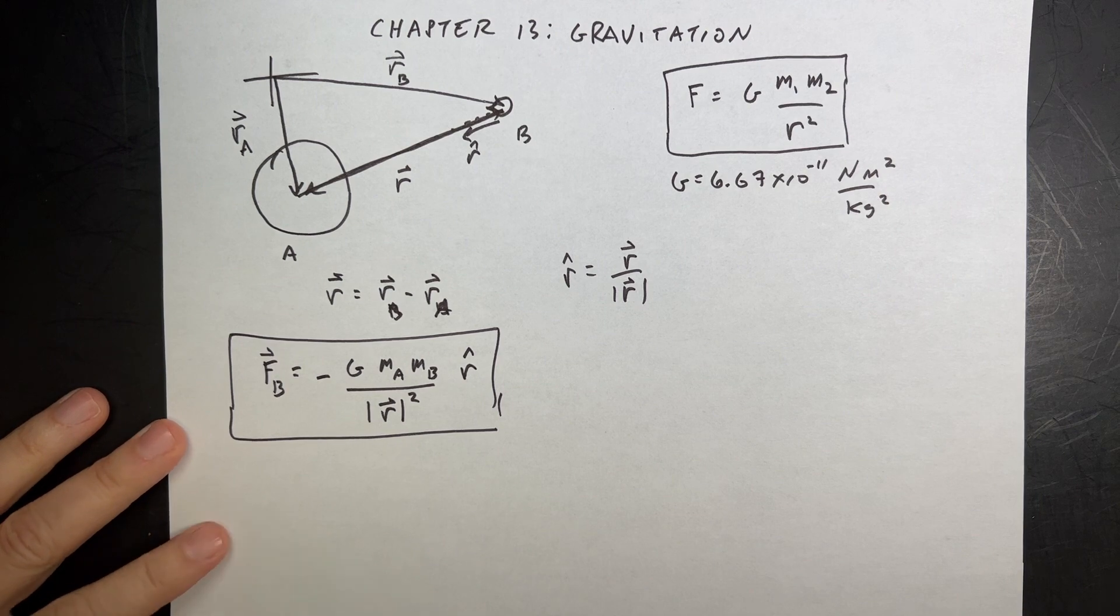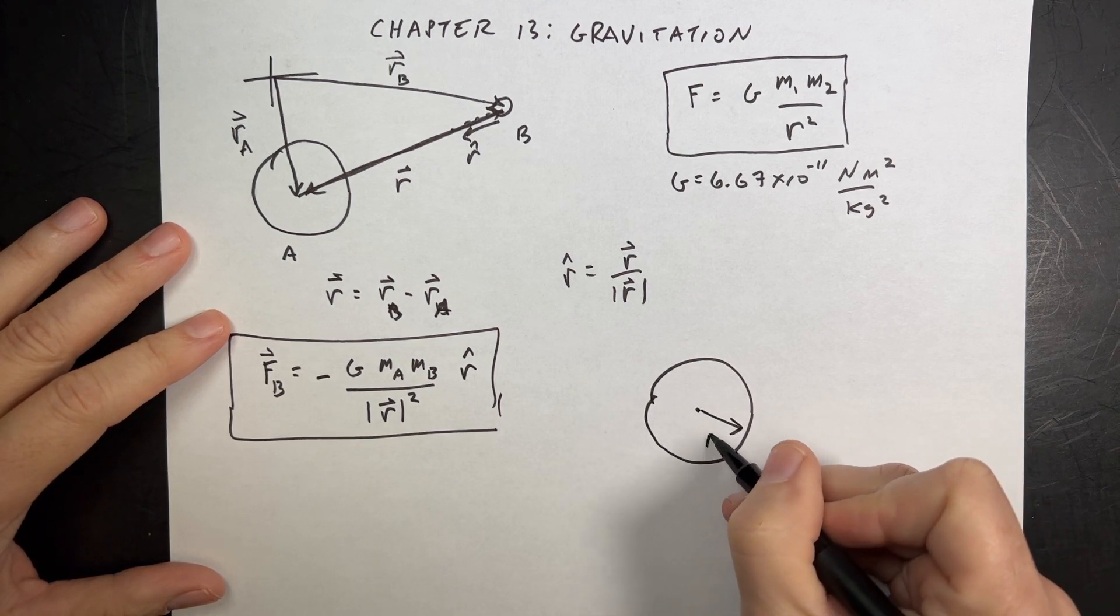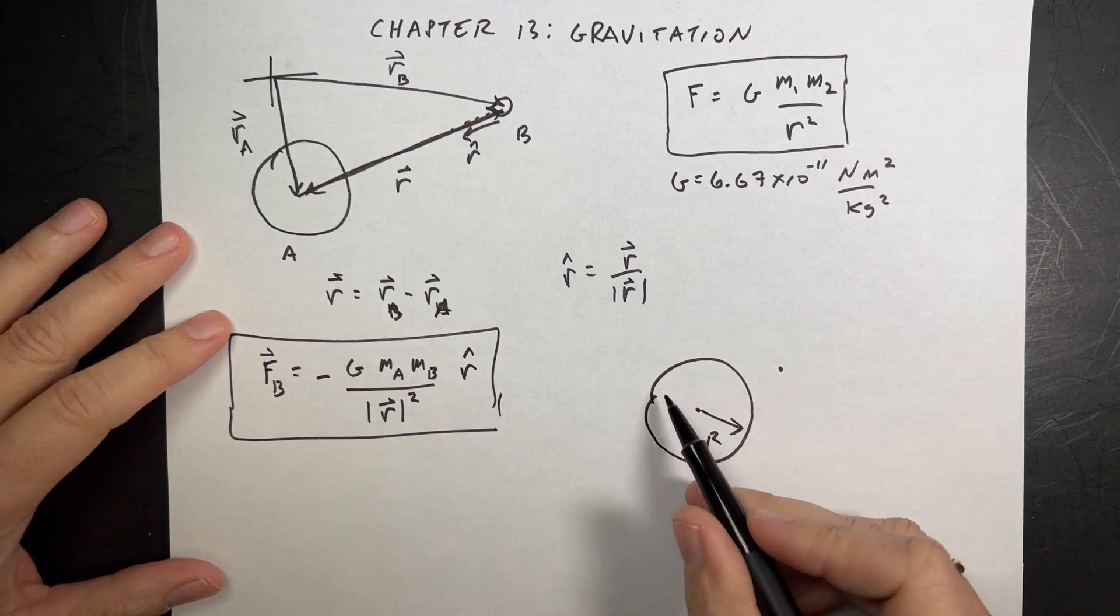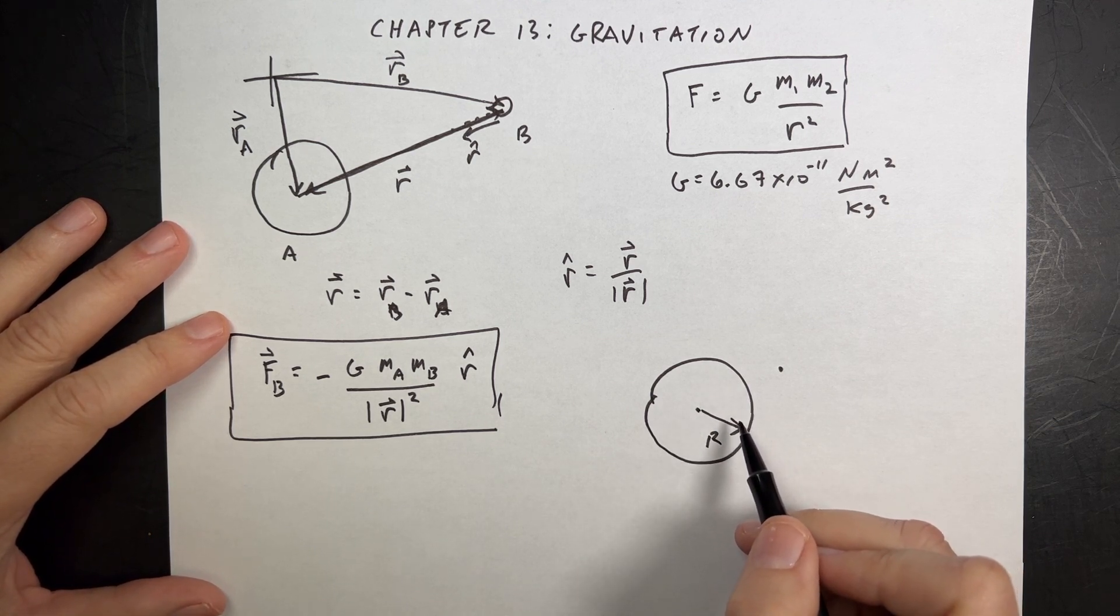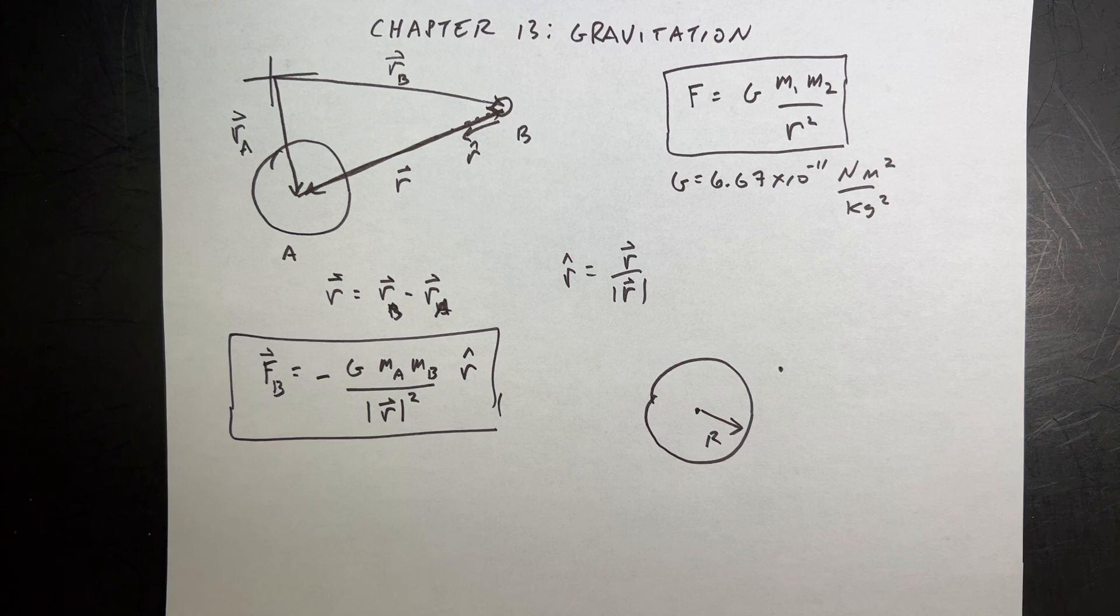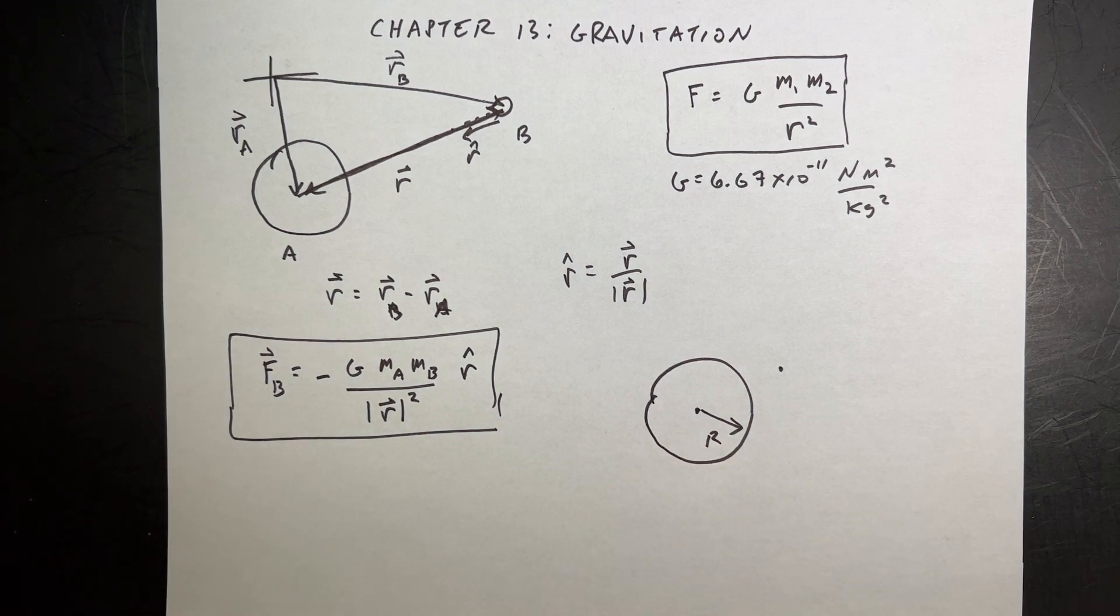They have a thing in there about spheres. If I have a sphere of radius R, and I'm over here and I want to find the gravitational force on an object there, this sphere, as long as it's uniformly distributed or at least spherically distributed, acts like it's all at the center, a point mass at the center. So that allows us to deal with finite-sized objects.